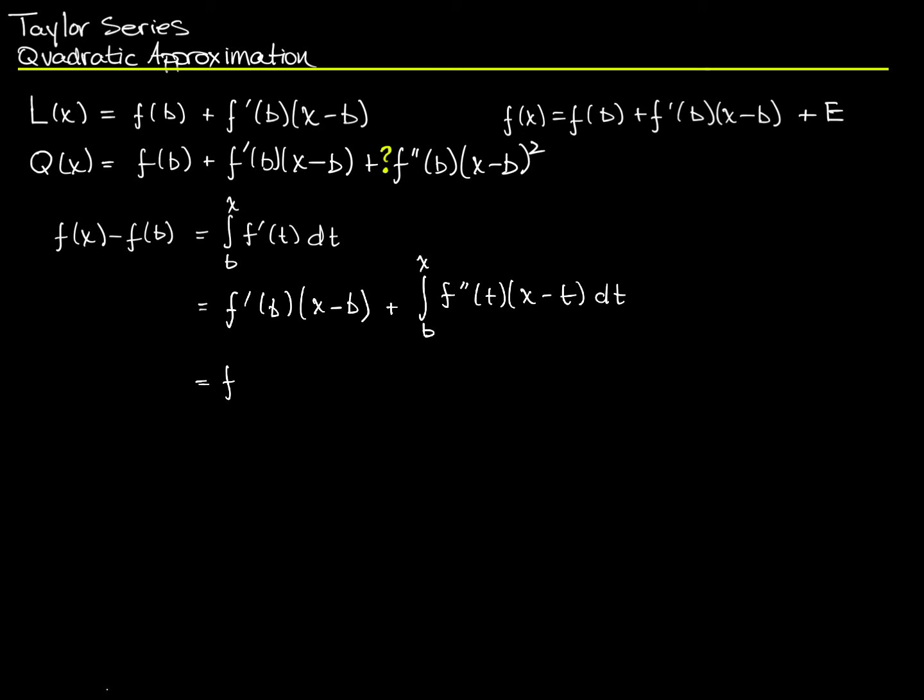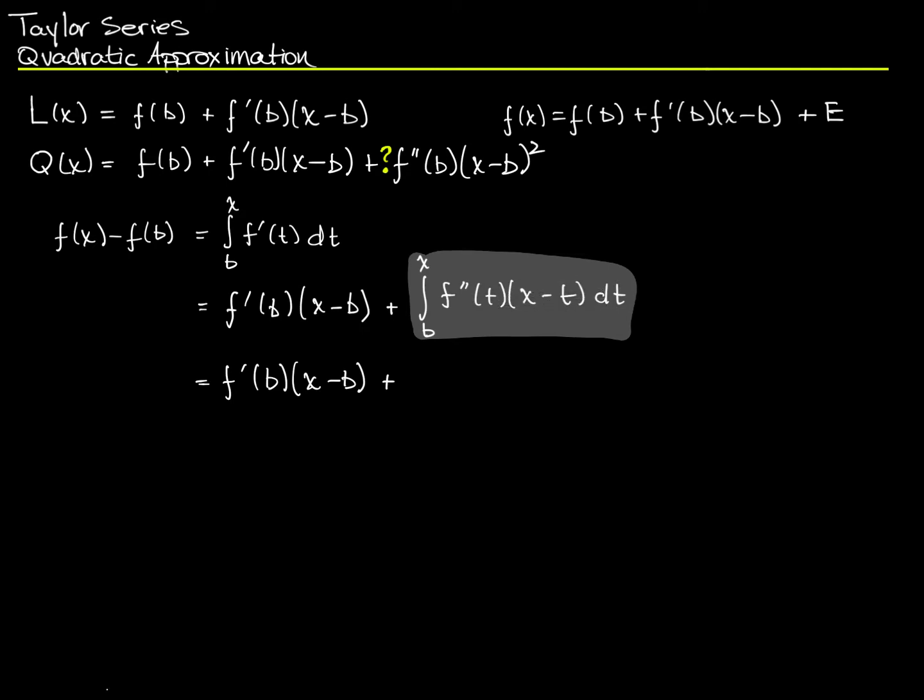I'm not actually going to go through all of that integration again, but I will say that what we got, what our result was, is f'(b)(x-b) plus the integral from b to x of f''(t)(x-t)dt. And if we do integration by parts again on this integral, we'll get... I won't bore you with the details, but I'll go ahead and spell out what the result is.